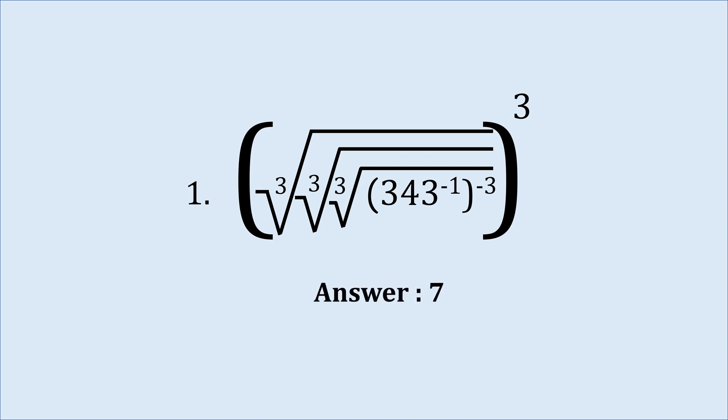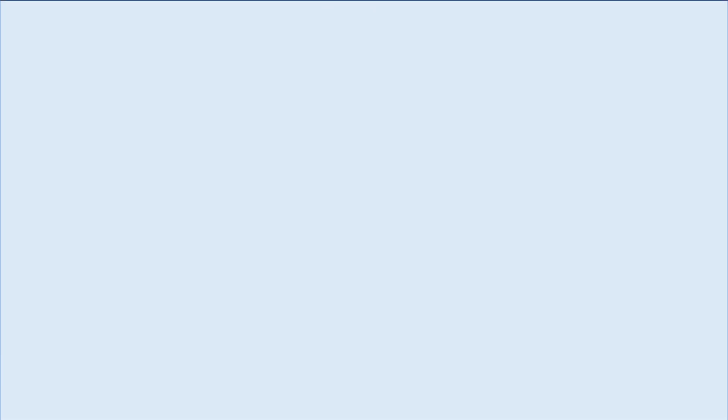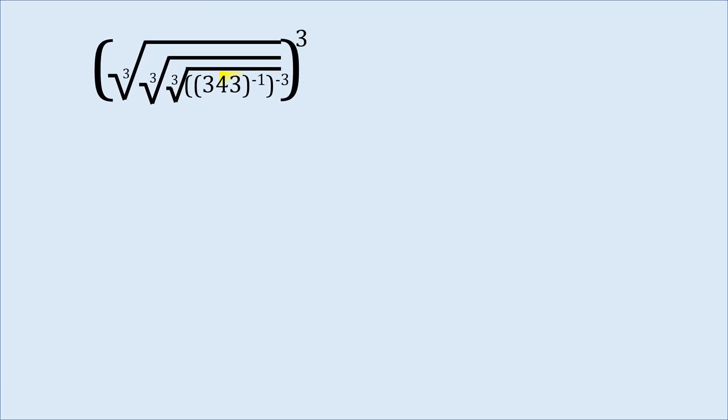For those of us that couldn't solve it for some reason, here goes the answer. We see that there is a 343 under the innermost cube root. Let's factorize 343. We find 343 equals 7 times 7 times 7 equals 7 cube.